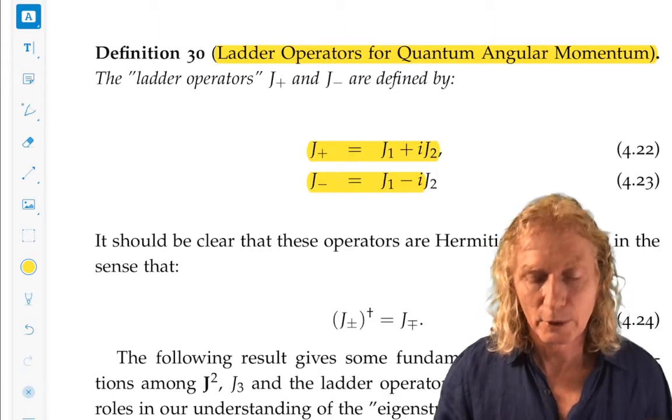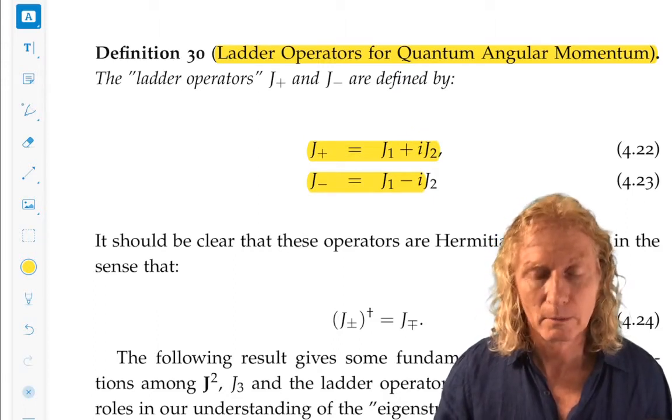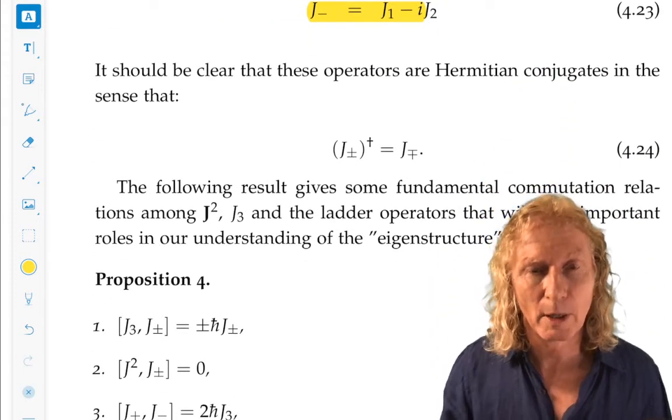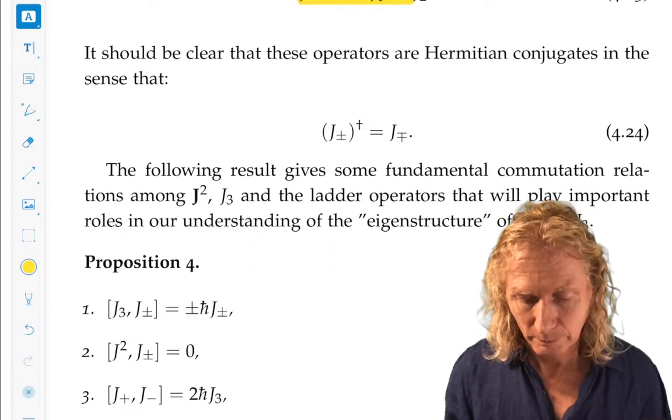Now j-plus and j-minus are not Hermitian or self-adjoint, but they do satisfy a nice property.